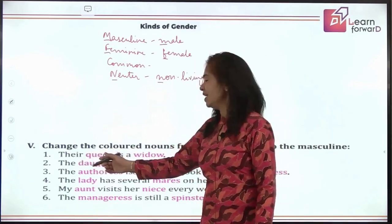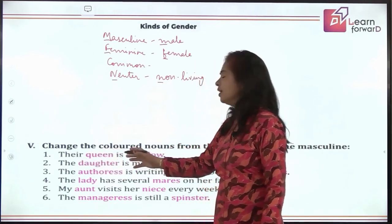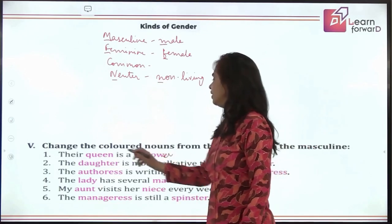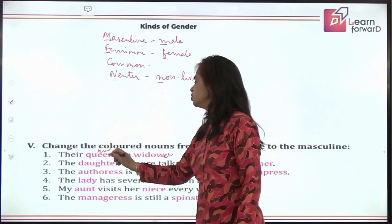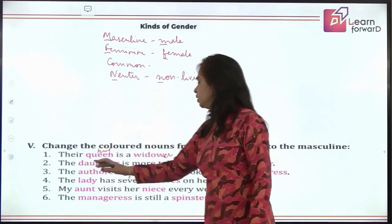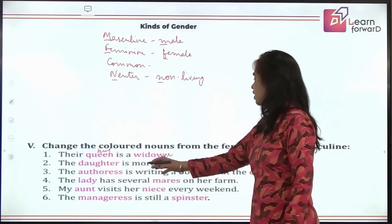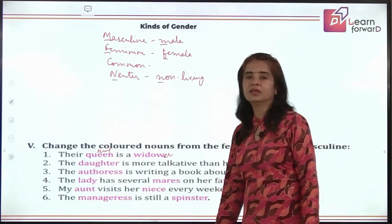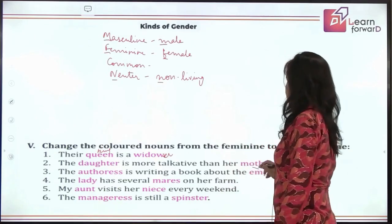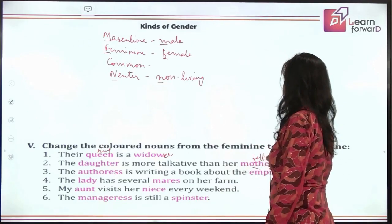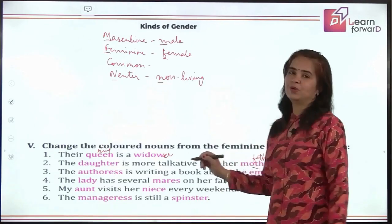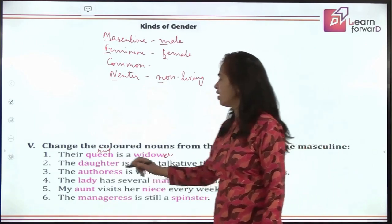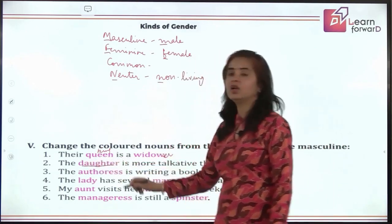Their king is a widower — so you just add '-er' here; 'queen' becomes 'king'. It's so easy. 'The daughter is more talkative than her mother' — so 'daughter' becomes 'son', and 'mother' becomes 'father'. Is that all you have to do? No — there are some necessary changes you have to make.